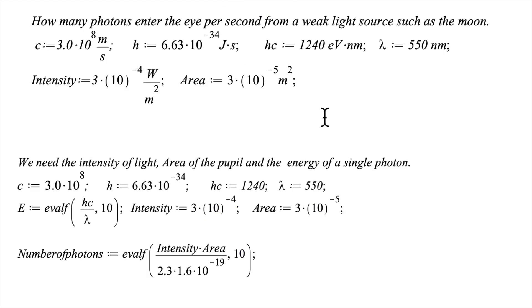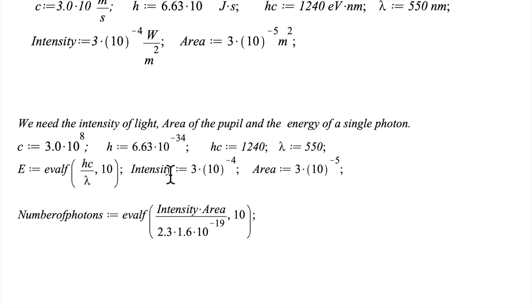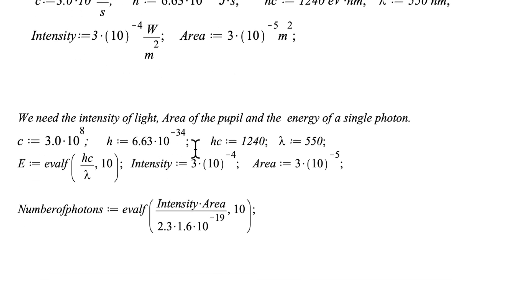On this last example, we ask the question: how many photons enter the eye per second from a weak light source such as the moon? For this, we need several constants. This is the speed of light, this is Planck's constant, and this is the combination of them. This we're taking to be the wavelength of visible light. Visible light goes from 400 nanometers to 700 nanometers, and this is an average. In this example, the wavelength is going to be 550 nanometers.